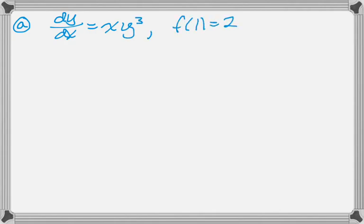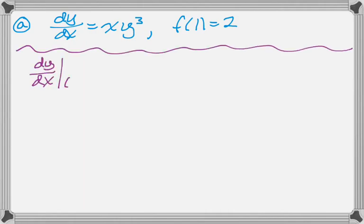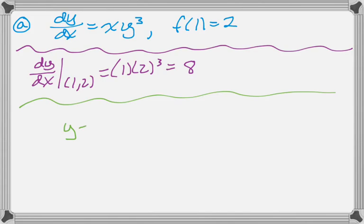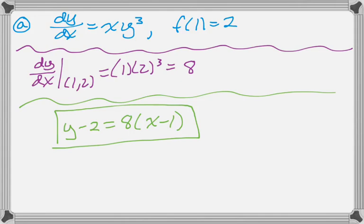First thing, we're given dy/dx, and we're told that f(1) is 2, and we have to write the equation to the tangent line, so this one's pretty simple. We just substitute in and we get that the slope is 8, and then we use point-slope form to get our tangent line, so nothing too terrible there.